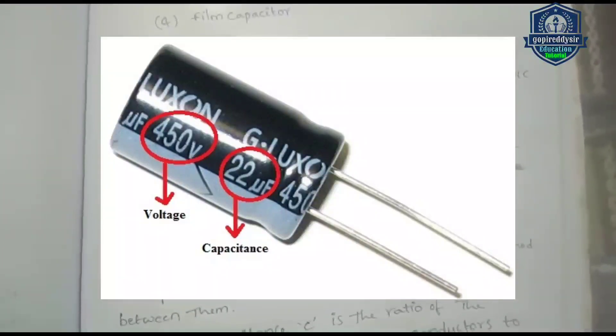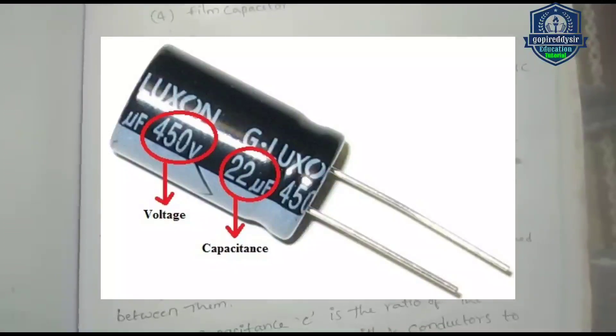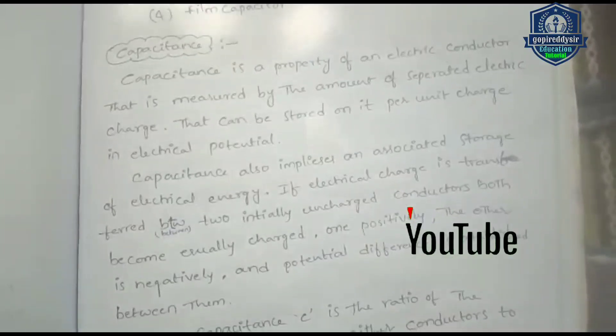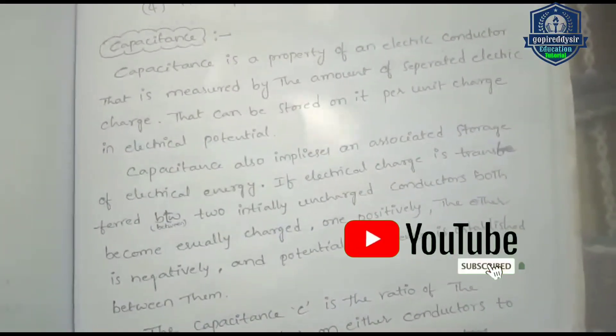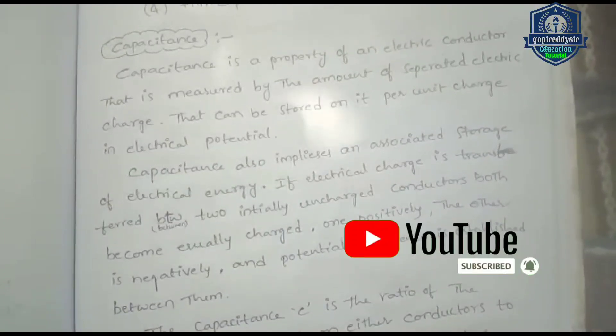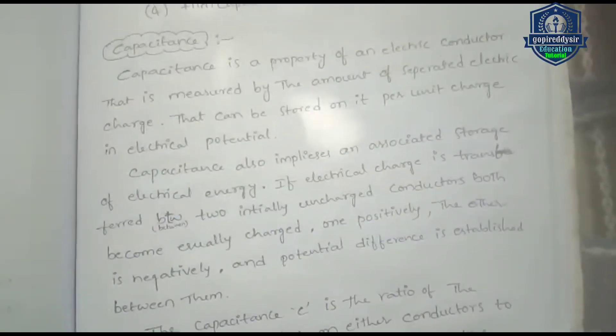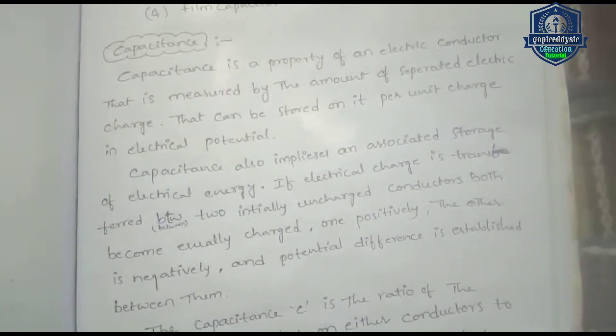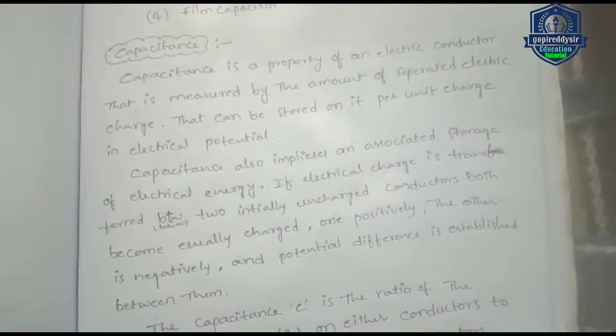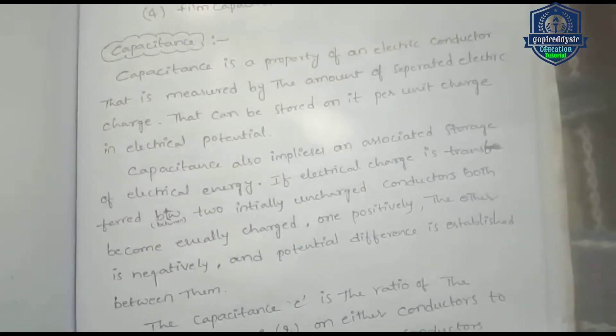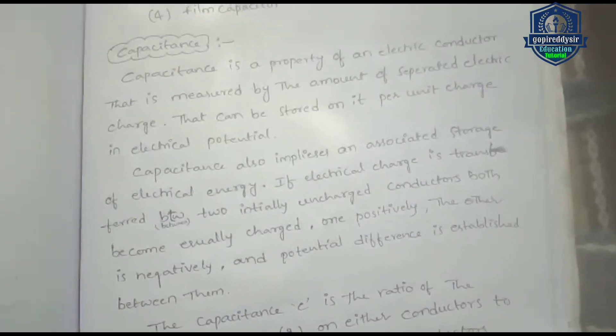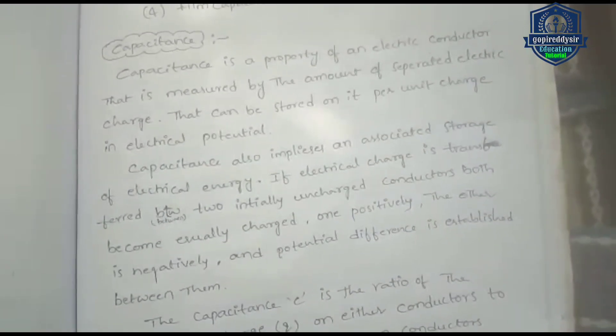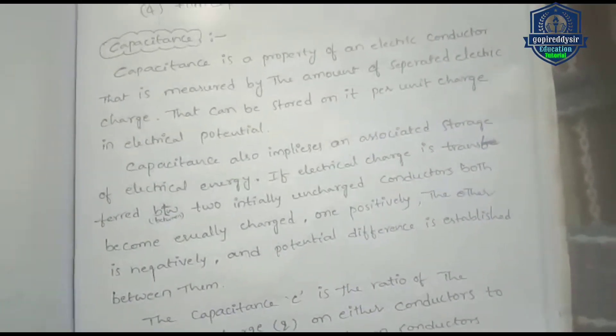If electrical charge is transferred between two initially uncharged conductors, there are two conductors. The electrical charge transfers, creating a positive charge on one and a negative charge on the other.